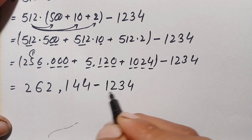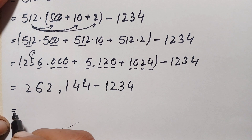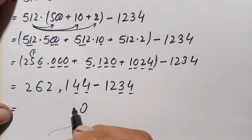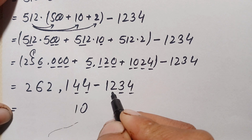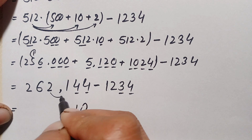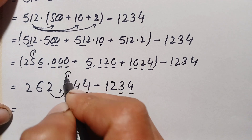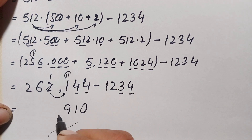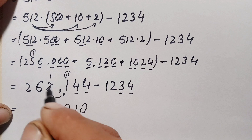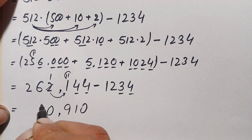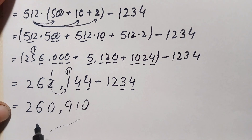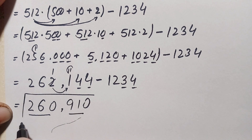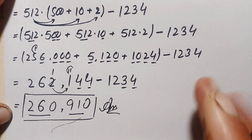Finally, we subtract 1234 from 262,144. Starting from the ones position: 4 minus 4 is 0; 4 minus 3 is 1; 1 minus 2 is not possible, so we borrow 10 from the next digit, giving 11 minus 2 equals 9; 1 minus 1 is 0; and the remaining digits are 6 and 2. So the subtraction gives 260,910... the result is 260,912.